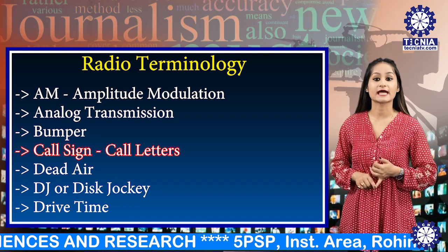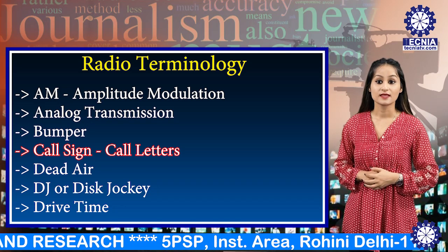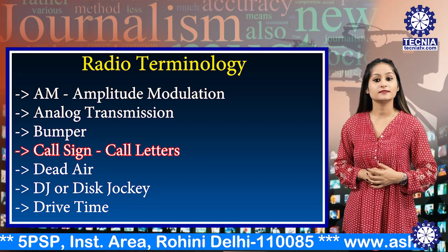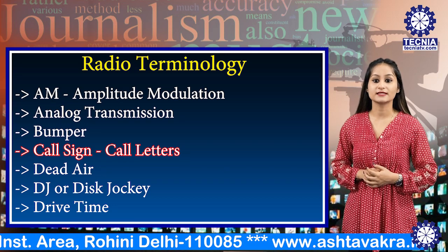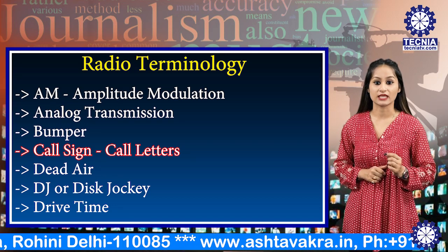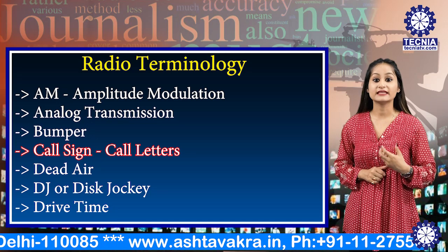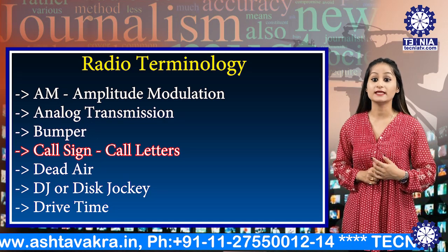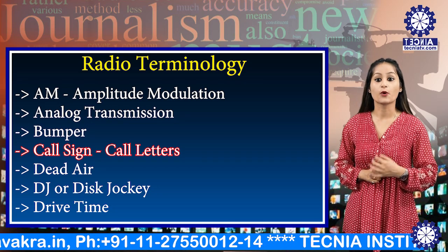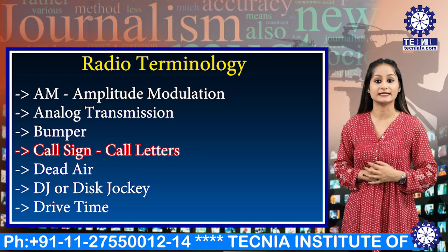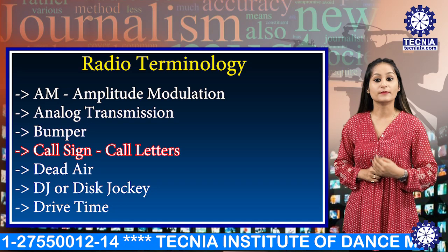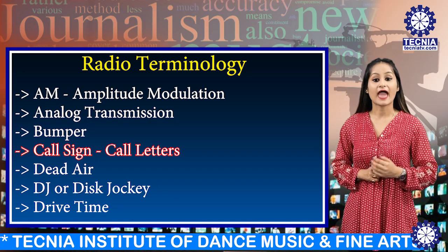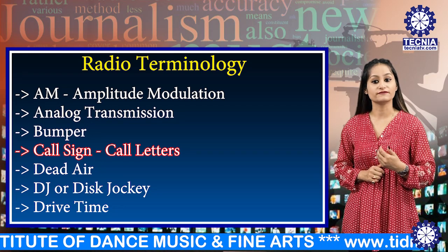Next is the Call Sign, also known as Call Letters — the unique designation of a transmitter or broadcast station. In the United States, they generally start with the letter K for the West and W for the East. Older stations may have only a three-letter designation while newer ones have four letters. Stations must announce their call sign on the top of each hour and when signing on or off.